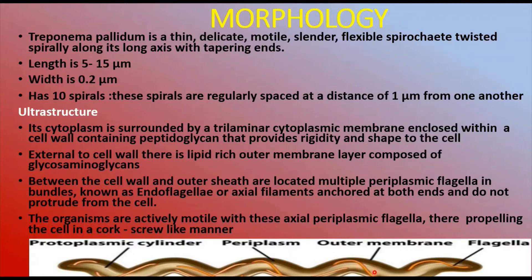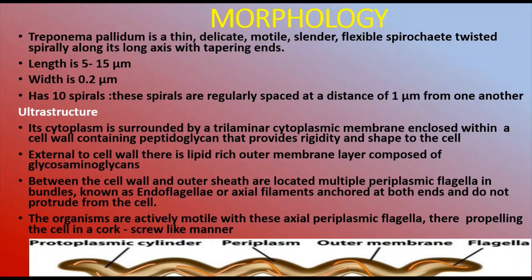Between the cell wall and outer sheath, endoflagella and exoflagella are present, which are important for the motility of Treponema pallidum. It moves in a cross screw-like, propeller manner. The periplasmic flagella in bundles are known as endoflagella or axial filaments, which anchor at both ends and do not protrude from the cell.